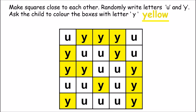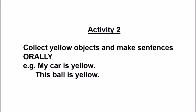Y, yellow. Now another activity is ask the child to collect yellow objects. They have to look in the house for yellow objects and then make sentences orally. For example, if the child has found a yellow car, then child to hold the car in his hands and say, 'My car is yellow.'